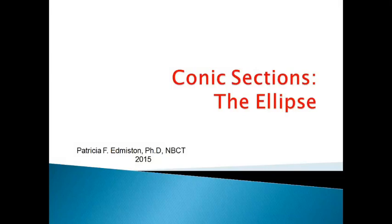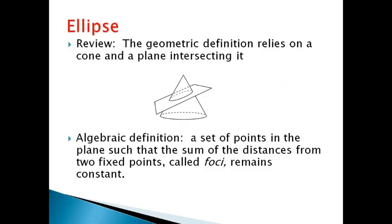Today we're going to do conic sections — the ellipse. The geometric definition is where a plane intersects a cone at a diagonal. The algebraic definition is a set of points in a plane such that the sum of the distances from two fixed points, called foci, remains constant.